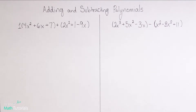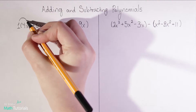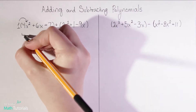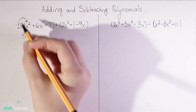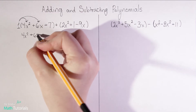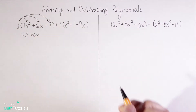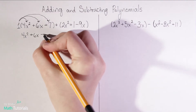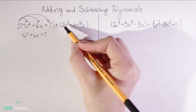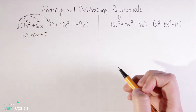I like to walk students through this process: 1 times 4x squared is 4x squared, 1 times 6x is positive 6x, and 1 times positive 7 is positive 7. So now we go ahead and look at the second polynomial, which also has a set of parentheses around it.